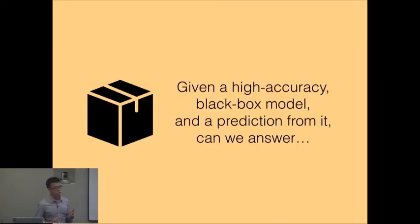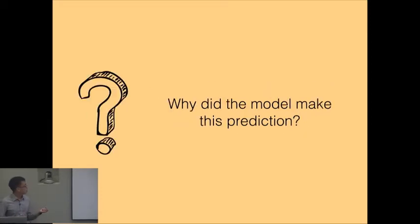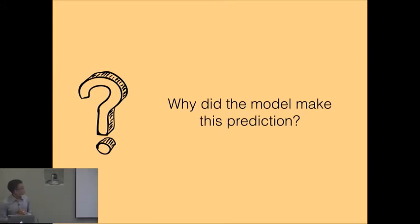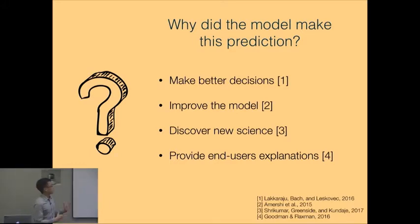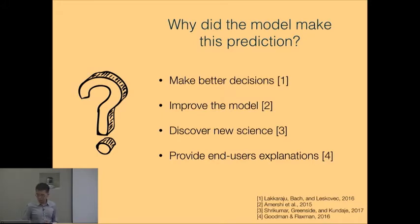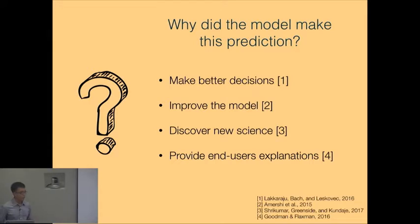The central question is: given a high-accuracy black box model and a prediction that this model makes, can we answer why did the model make this prediction, for some definition of 'why'? We are interested in this because beyond just getting high accuracy, if we can understand why the model made a prediction, we can make better decisions, examine the model's reasoning, understand different failure modes, discover new principles about the world, and provide explanations to end-users — which will be increasingly important as ML systems get deployed more in the real world. You may be familiar with the new EU regulations around the right to an explanation.